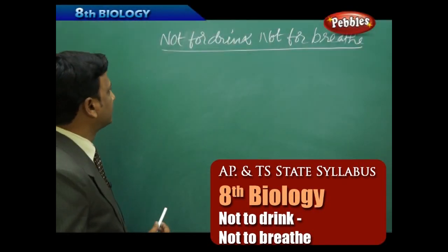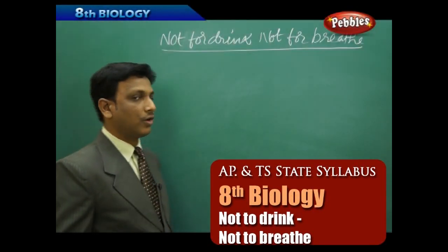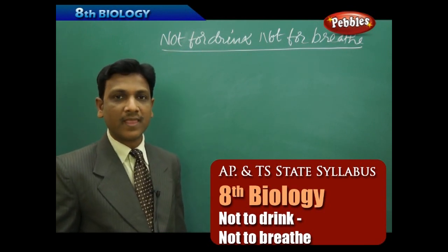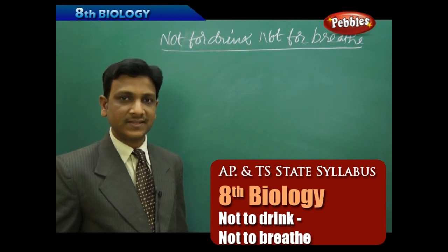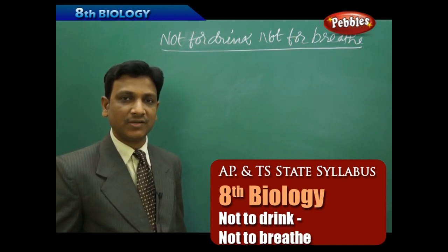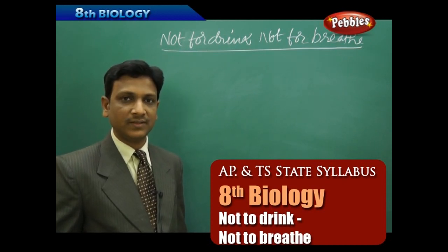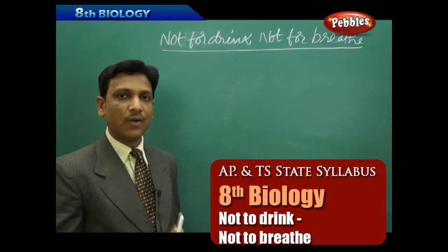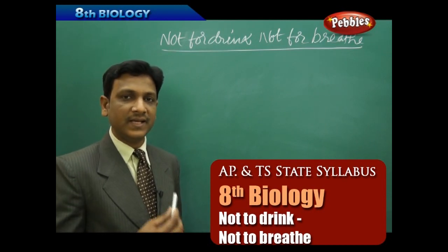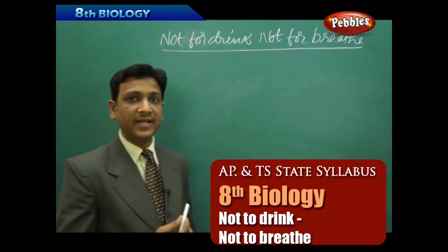We are looking into another chapter — 'not for drink, not for breathe.' In ancient times, when there was no industrialization and no rapid urbanization, there was a natural setup with a natural environment and a good amount of forest and natural ecosystems. The air surrounding the planet was very good and fresh, and could be easily breathed by organisms.